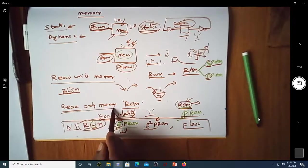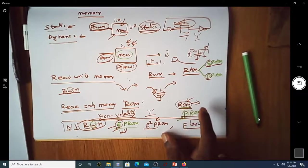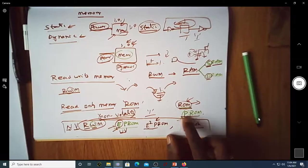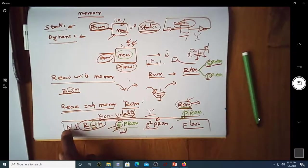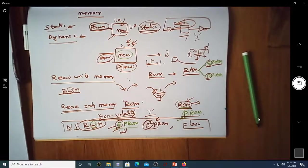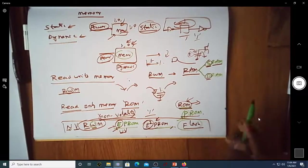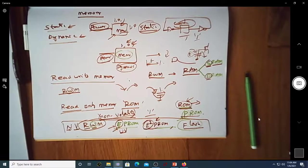Read-only memories are used for important or routine programs that need to be used repeatedly in a system. ROM is programmed initially and is non-volatile. Within non-volatile memories, EPROM allows erasing the program using UV light, EEPROM allows electrically erasable programming, and flash is the final category. In the coming videos, we shall see the working of individual memory types and understand how values are stored and read.